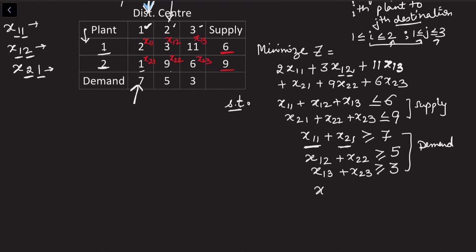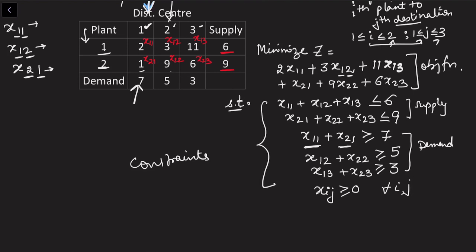Finally, all decision variables must be non-negative since supply cannot be negative: xij ≥ 0 for every i and j. This completes our formulation of the transportation problem. From a real situation we extract data and convert it into a mathematical formulation. If the formulation turns out to be linear it is a linear programming problem; if the objective function or any constraint turns out to be non-linear, it moves to the non-linear category. We'll learn how to solve these linear programming problems in the next videos.